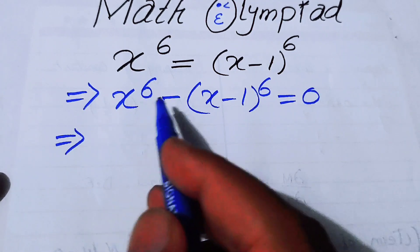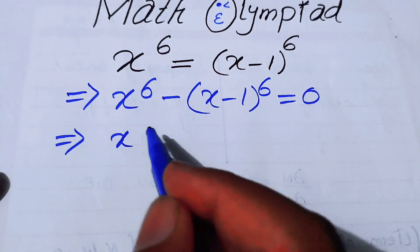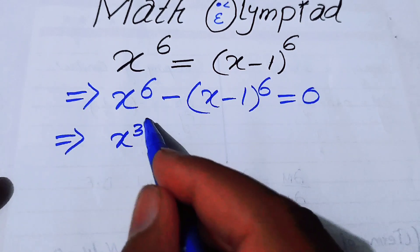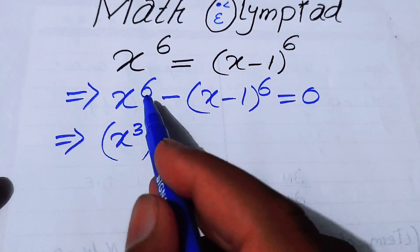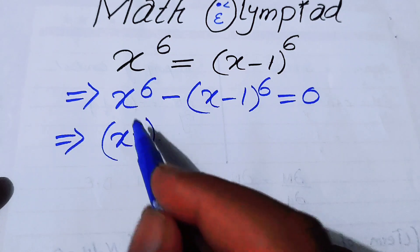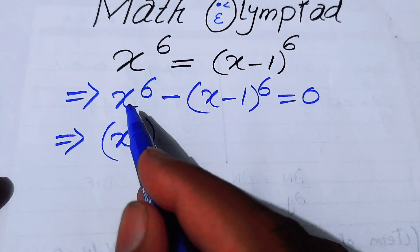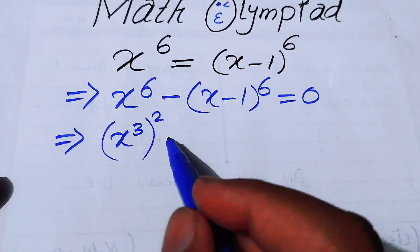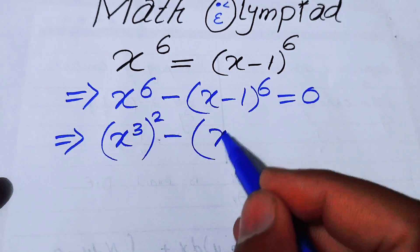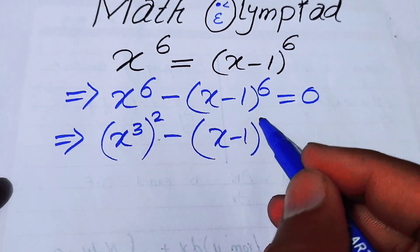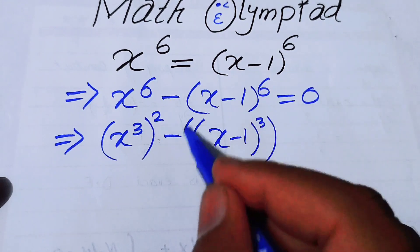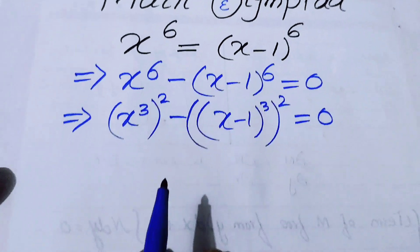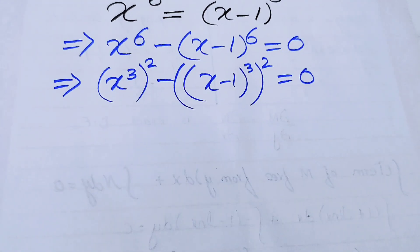After that, I can apply the difference of squares formula to convert this equation into square form. We write x to the power of 6 as x cubed to the power of 2, minus (x−1)³ whole squared, equals 0.